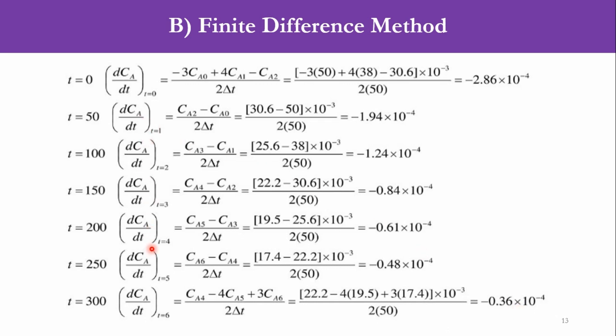For the intermediate values we have to take the concentration one step ahead minus concentration one step behind. Accordingly, if you say it as t1, we need to know the concentration at 0.2 and then at 0.0, and then we have to subtract: (CA2 - CA0)/(2ΔT) = (30.6 - 50)×10^-3 / (2×50). You have to carefully see that this 10^-3 is with this value and with this value, but it is taken common from these two values, so accordingly we get -1.94×10^-4. Similarly for t=100 we need CA3 and CA1, we got -1.2×10^-4. Then for T3 we got -0.84 because we have taken CA4 and CA2.